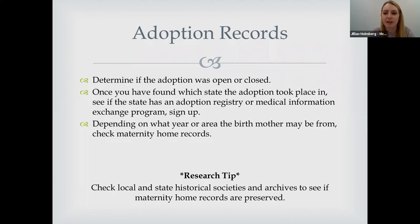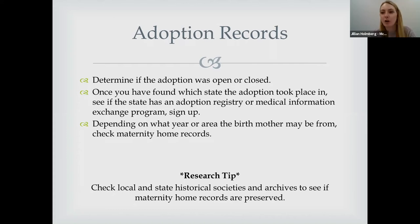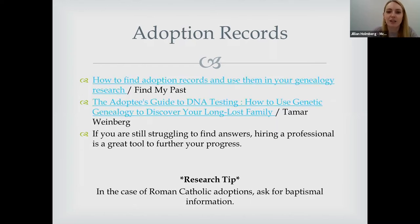Depending on the year or area, the birth mother may be from, check maternity home records. Especially in the 1950s, 60s, and 70s, many women — especially teenagers or those in their early 20s — were sent to maternity homes to give birth and place children for adoption quietly. Local and state historical societies often have archives that may preserve maternity home records, so it's worth checking there. Also provided are links including one from Find My Past on adoption records for genealogy research.